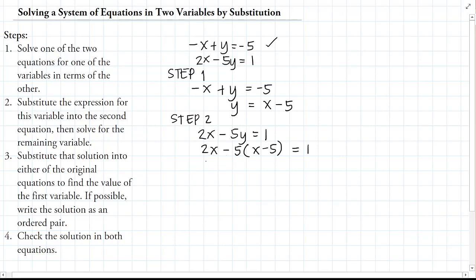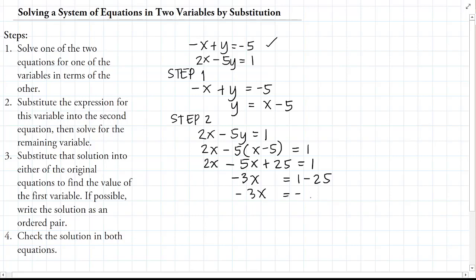At this point we already have an equation with only one variable, X, so we can now solve for its value by employing the different rules for solving equations. Combining like terms, we get negative 3X equals 1 minus 25, which gives negative 3X equals negative 24. Dividing both sides by negative 3, X equals 8. That completes Step 2 — we have solved for the remaining variable.